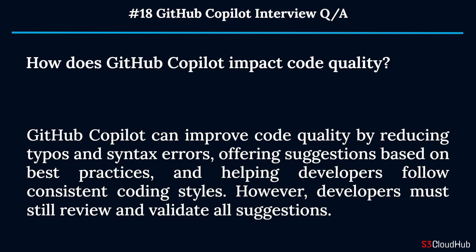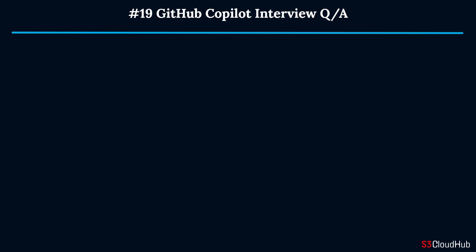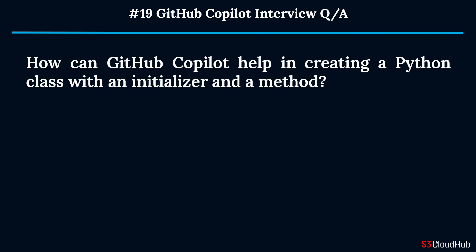Question eighteen: How does GitHub Copilot impact code quality? GitHub Copilot can improve code quality by reducing typos and syntax errors, offering suggestions based on best practices, and helping developers follow consistent coding styles. However, developers must still review and validate all suggestions.